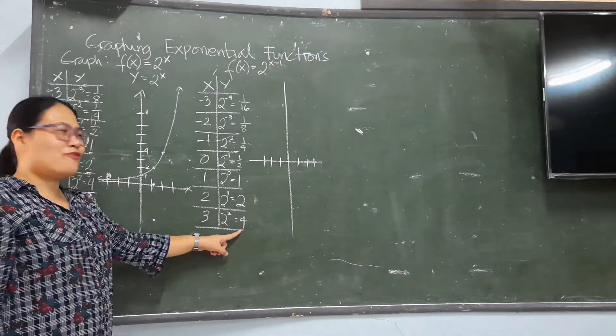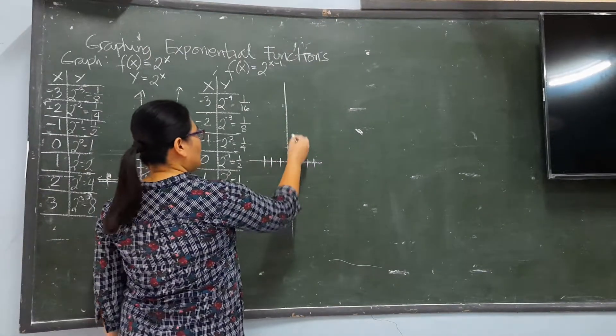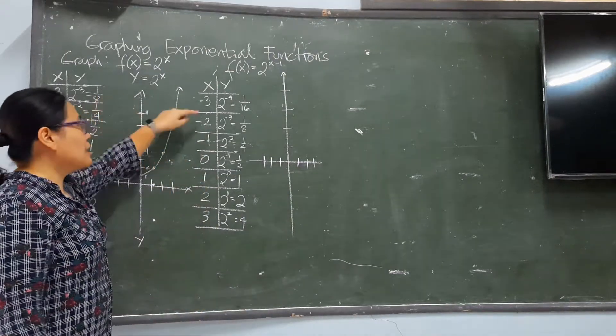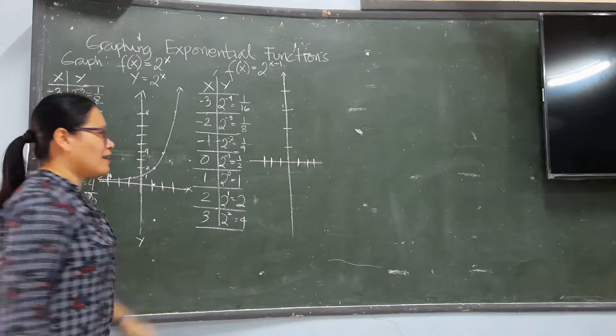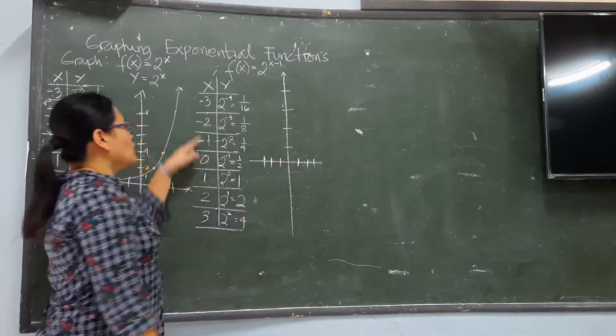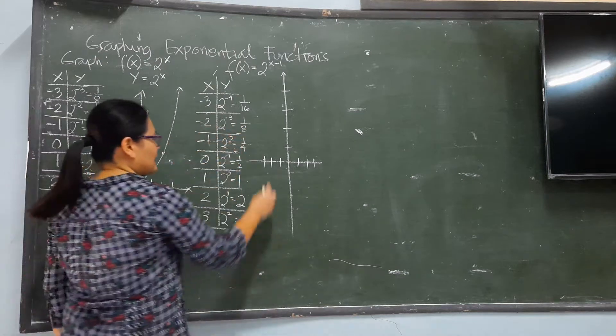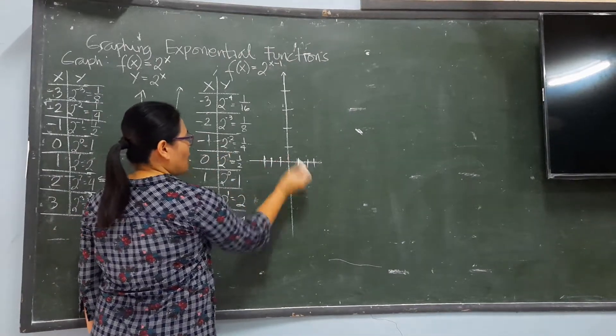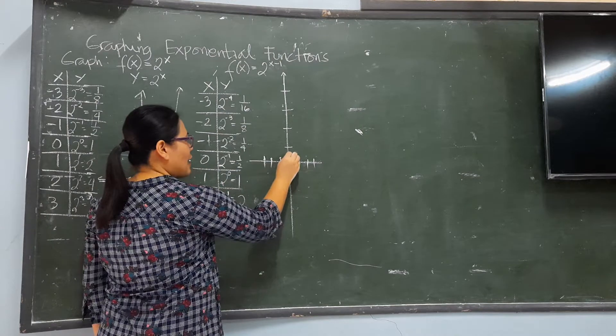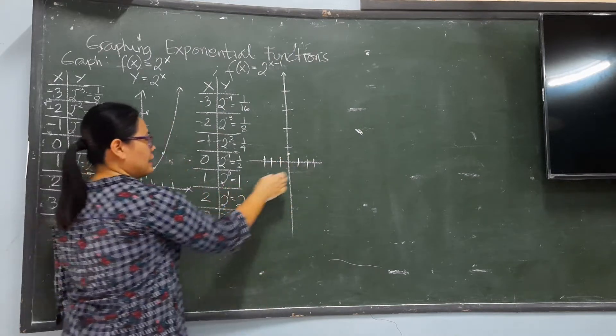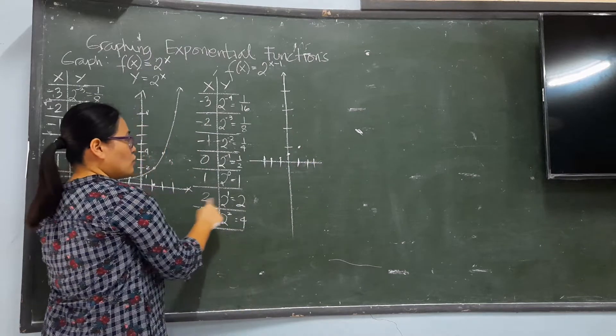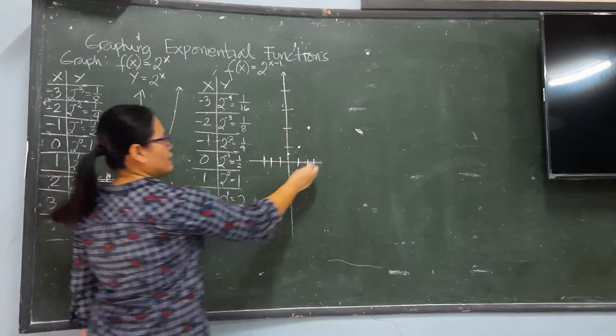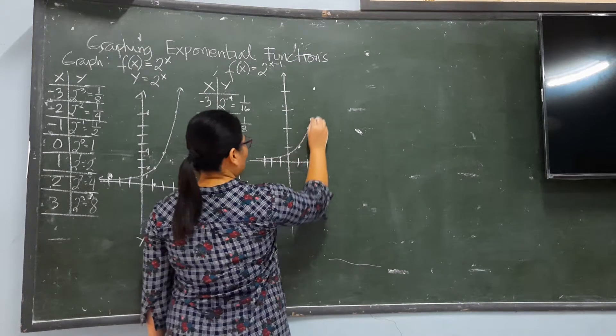The highest number is 4. So, let's start. Negative 3, 1 over 16. Negative 2, it is 1 eighth. Negative 1, 1 fourth. 0, 1 half. 1, 1. 2, 2. 3, 4. So, the graph is going that way.